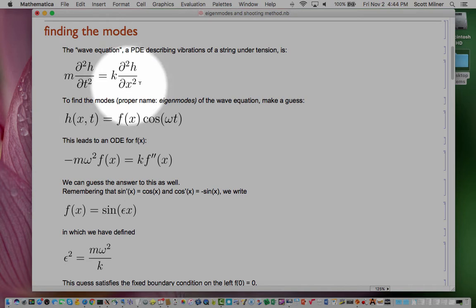k is the spring constant of the string, the stiffness of it, how easy it is to extend in length, which happens a little bit when the string swings sideways. It has to get a little longer. And m is the mass per unit length of the string.